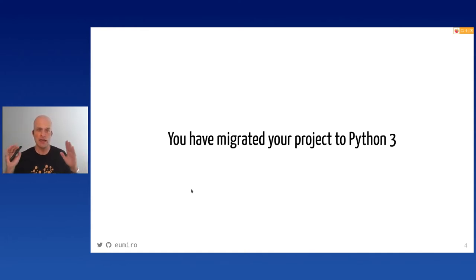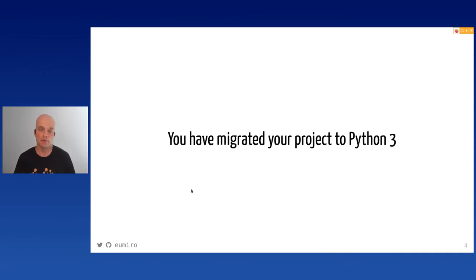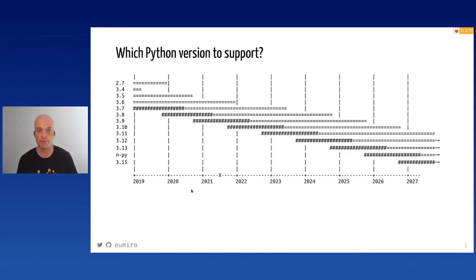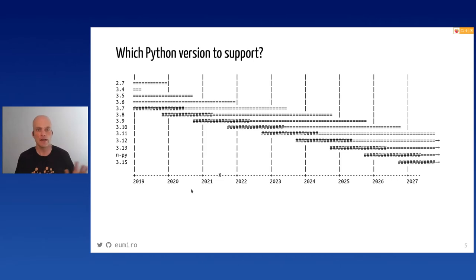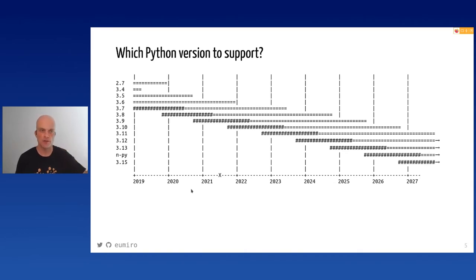I assume you have already migrated your project to some version of Python 3, so it works — but maybe there is still something interesting we can look at to improve your code and make it future-proof. Which Python version should your code support? Here's a calendar of all Python versions. We're now in summer 2021: Python 3.9 is the main version, 3.10 is coming soon, 3.8/3.7/3.6 still get security fixes, and 3.5, 3.4, and 2.7 are dead.